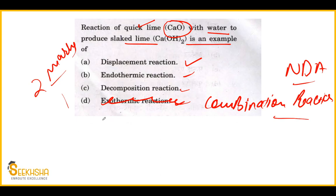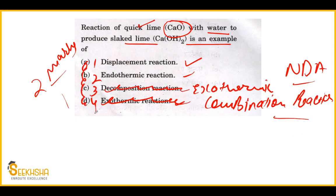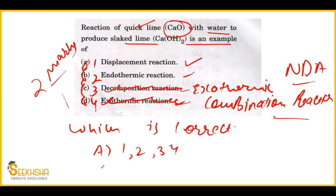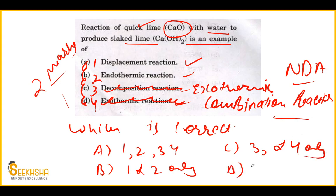Similarly, I can form a statement-based question: 'The reaction of quick lime CaO with water is an example of — statement 1: decomposition reaction; statement 2: exothermic reaction; statement 3 and 4 as other options.' Then ABCD options would be: A: 1 only, B: 1 and 2 only, C: 3 and 4 only, D: 1 and 4. This is how a statement-based question is formed from the same concept — multiple questions from one concept.